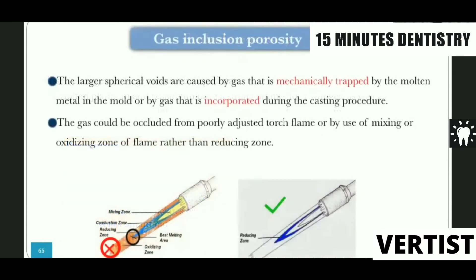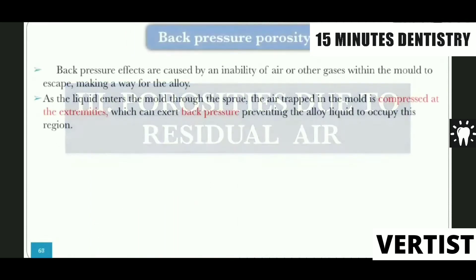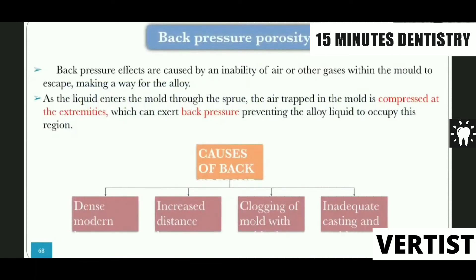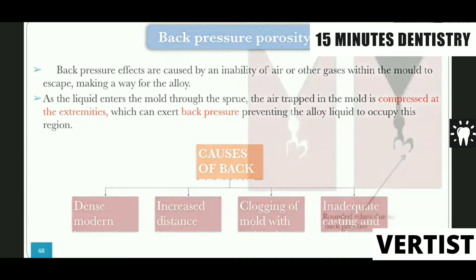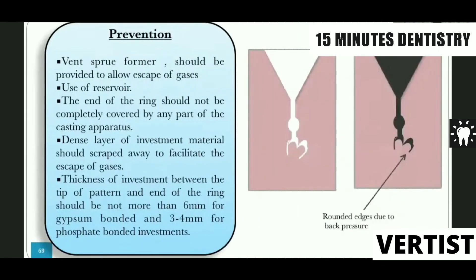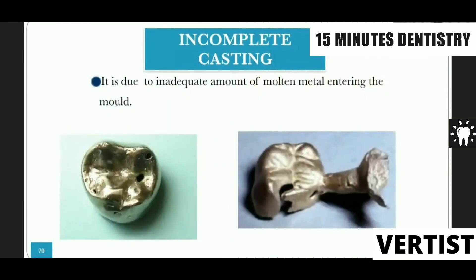Gas inclusion porosity occurs due to inclusion of gases. Back pressure porosity is caused by the inability of air and other gases to escape out of the investment to make way for the alloy. It can be caused by clogging of the mold, increased distance from the mold, inadequate casting pressure, or excessive investment thickness. Prevention includes proper venting, use of a reservoir, not completely covering the end of the ring, scraping out dense investment layers, and keeping the thickness of investment from the top surface to 3–4 mm.